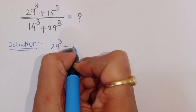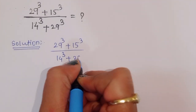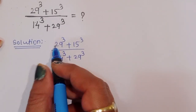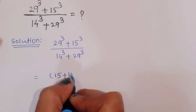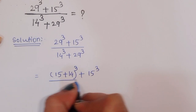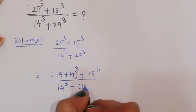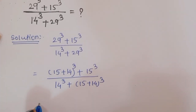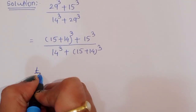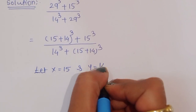We can write 29 as 15 plus 14. So the expression becomes (15+14)³ + 15³ divided by 14³ + (15+14)³. Now let x equal 15 and y equal 14.